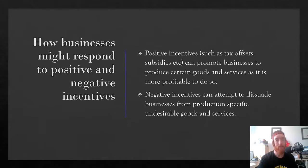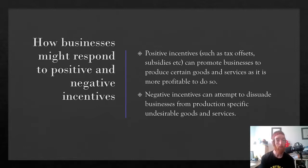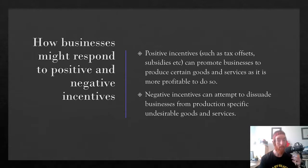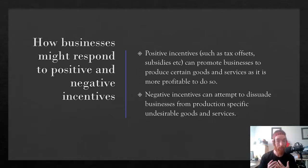Positive incentives for businesses can be things like tax cuts, tax offsets, subsidies, and grants, which can promote businesses to produce certain goods and services as it's more profitable to do so. For example, the government gave subsidies to businesses producing solar panels, making it more profitable because the government covered some of their production costs. Also, businesses that conduct research and development get a 45% tax offset, meaning they pay 45% less tax — so even if the R&D doesn't work out, they're still better off.